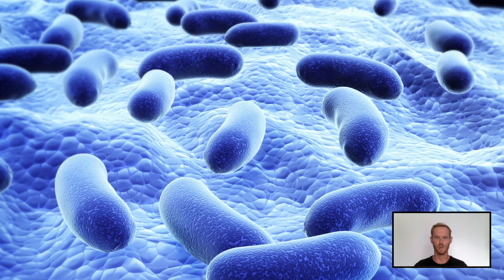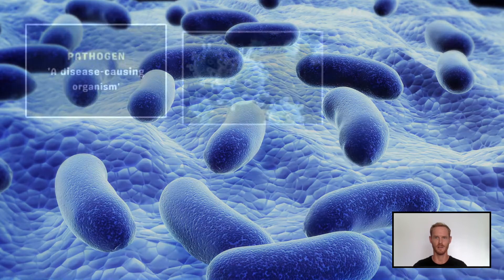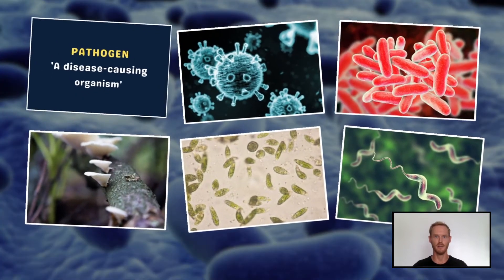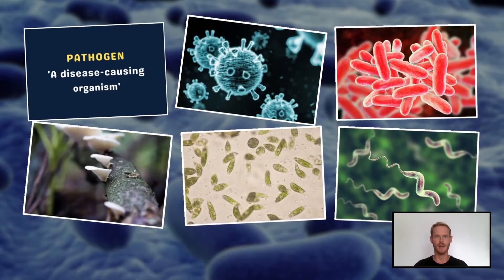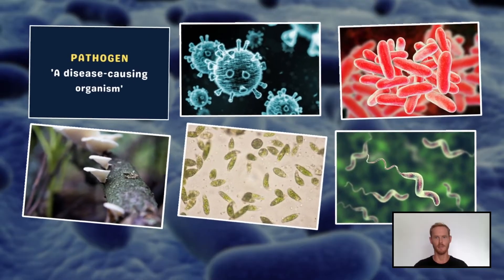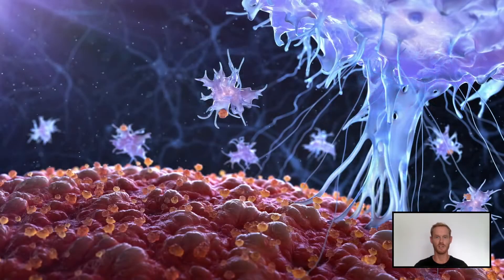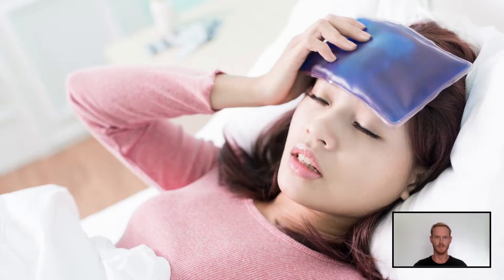Pathogens are disease-causing organisms and include viruses, certain bacteria, fungi, protoctista, and other organisms like parasitic worms. They cause damage to cells and disrupt the normal functioning of tissues, giving rise to symptoms and triggering an immune response in the host.